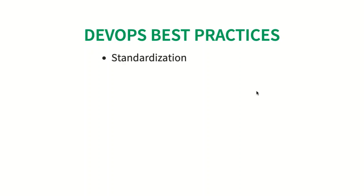Number one is standardization. When you implement DevOps across enterprises, there are a number of teams, and each of these teams might have their own processes and their own ways of solving problems. In ideal DevOps implementations, you'd have standardization of how things are done. While you'd have scope for innovation and trying new things, you'd want the majority of things to be similar across multiple teams. Having consistency and standardization across teams is very important.